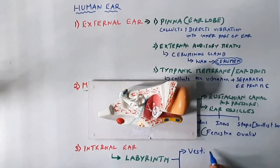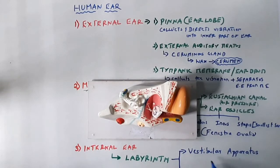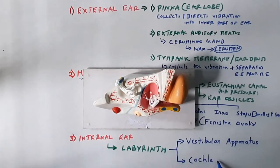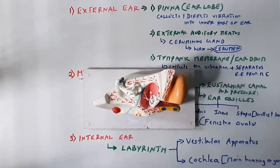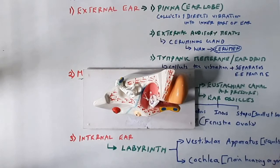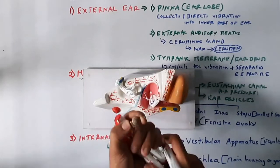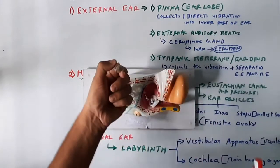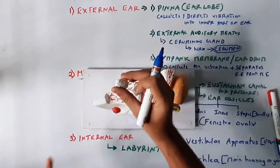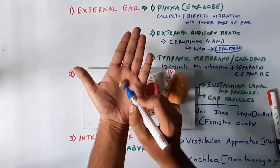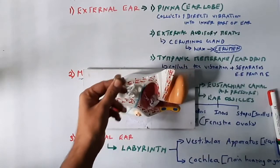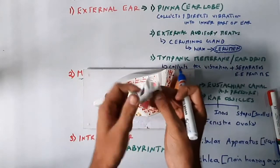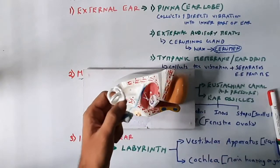The vestibular apparatus maintains body balance and equilibrium. The cochlea is the main hearing organ — if you are asked to name the main hearing organ in the ear, the answer is the cochlea. The cochlea is a very complex, coiled structure, like a coiled shell or snail.